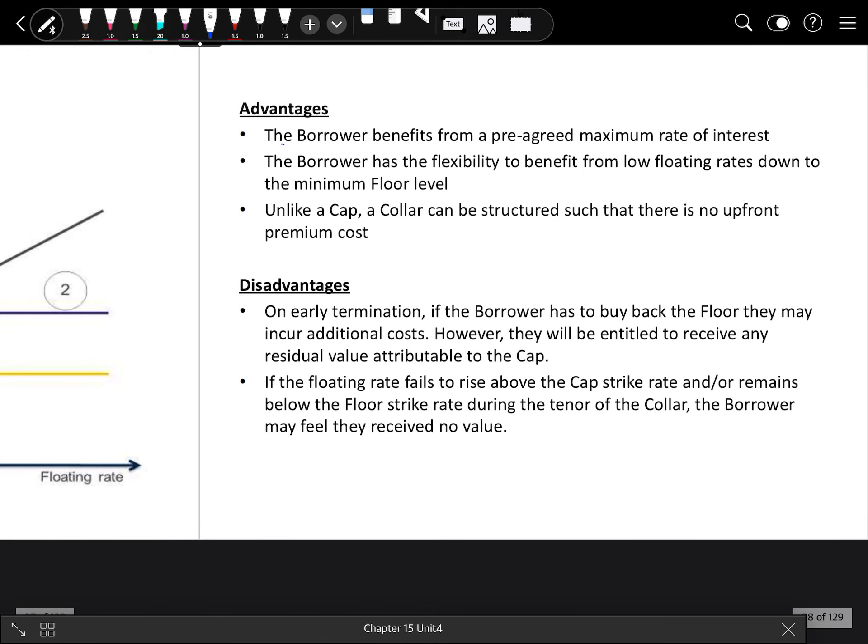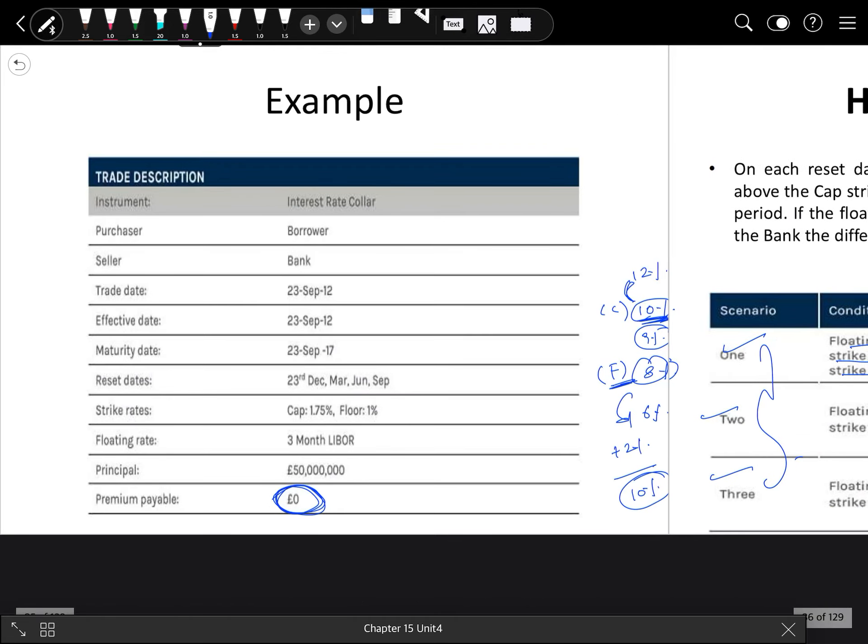Advantages: the borrower benefits from a pre-agreed maximum rate of interest. The borrower has the flexibility to benefit from low floating rates down to the minimum floor level. And unlike a cap, a collar can be structured such that there is no upfront premium cost. Here we have seen that our premium cost is zero because the borrower purchases the cap strike rate agreement and sells the floor, so our premium is zero in this case.